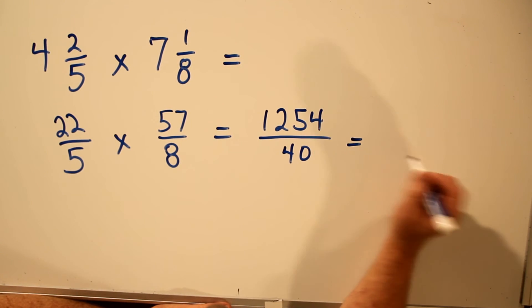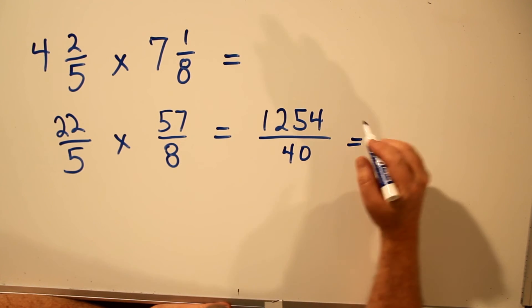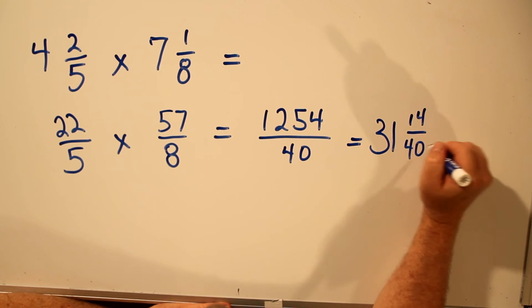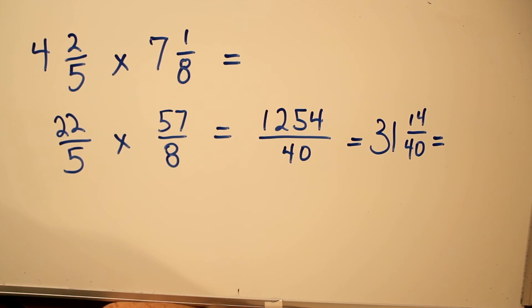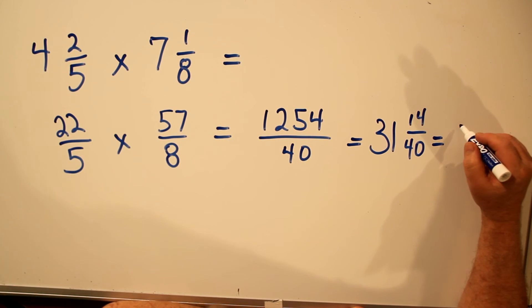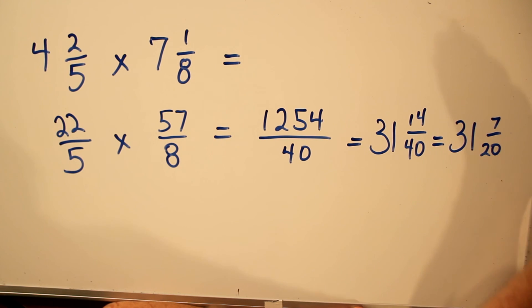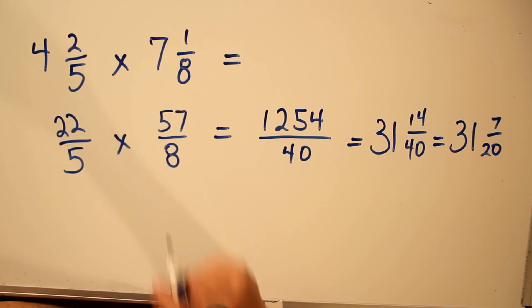In simplest form, 1254 over 40 is 31 and 14 over 40. However, 14 and 40 share a common factor of 2. So in simplest form, 31 and 7 over 20 is the answer in simplest form. And that's how you multiply two mixed numbers together.